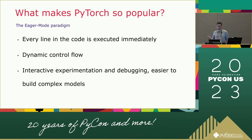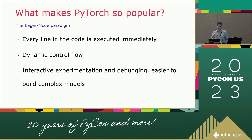A big reason PyTorch is Pythonic is that it really embraces eager dynamic execution — what some people call an eager mode paradigm. One way to think about this is that every line in a PyTorch program is executed in order with the rest of your Python program, and it's mostly executed immediately. The other bit is that it supports dynamic control flow, meaning your PyTorch neural network models can include if statements, while loops, for loops — all the normal control flow you'd expect in a Python program.